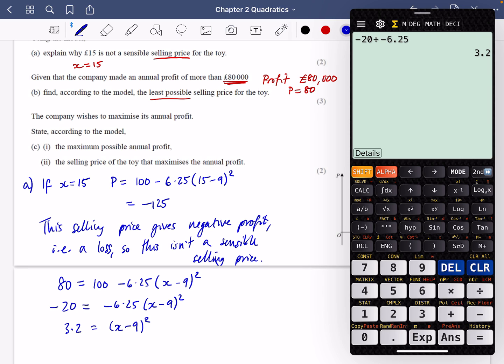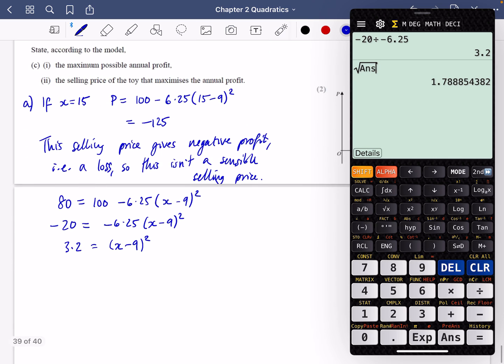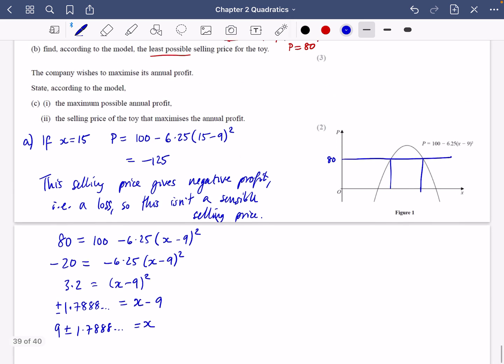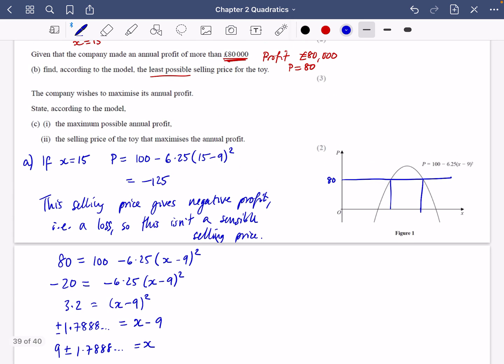I'm not going to do any expanding here because I've just got one single x there. I am then going to square root that answer, and I'm going to have my answers will be ±1.788 = x - 9. So my answer is going to be 9 ± 1.788. And I want to know the least selling price. So if we just think about what's happening in the graph here, this is when P is equal to 80, it's going to give me these two different values here. And I want them to be making more profit than £80,000. I want it to be anywhere inside this region that we've got here, so in between these values.